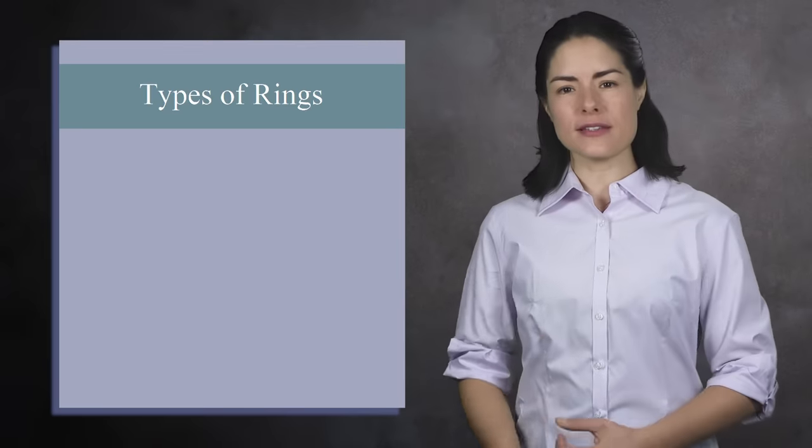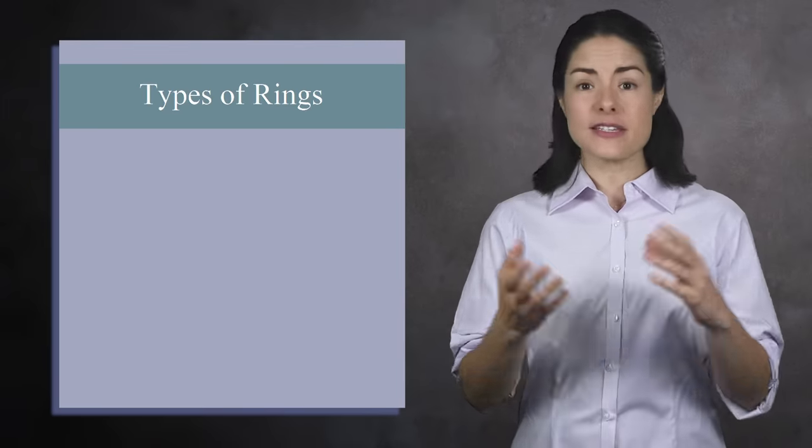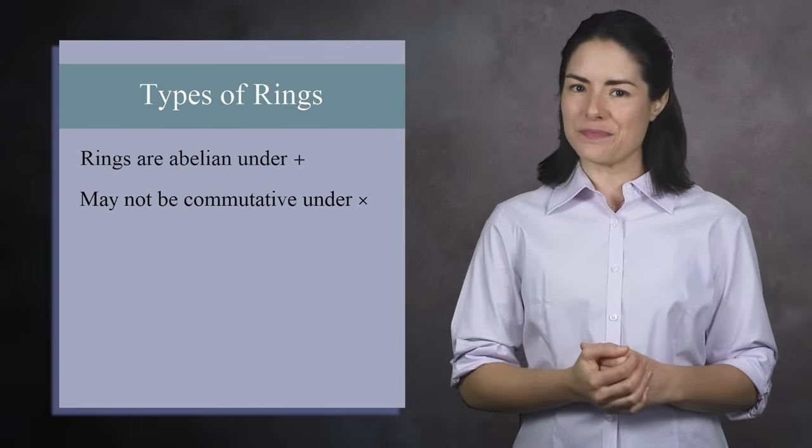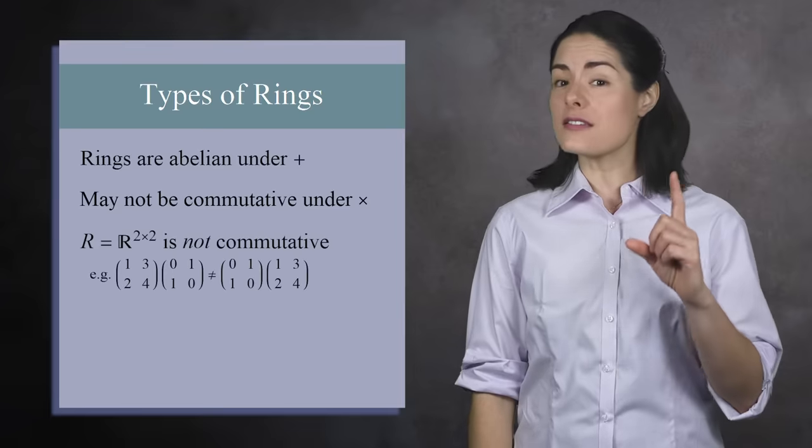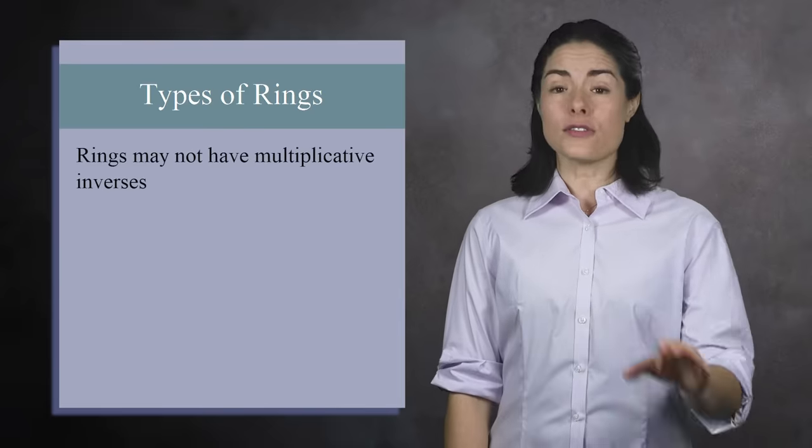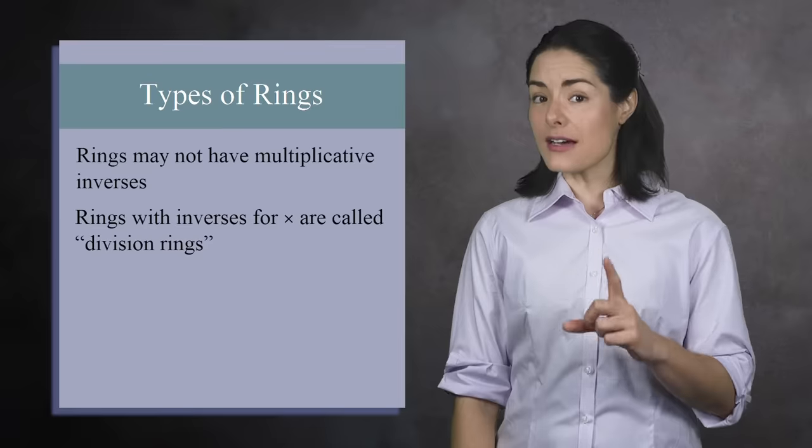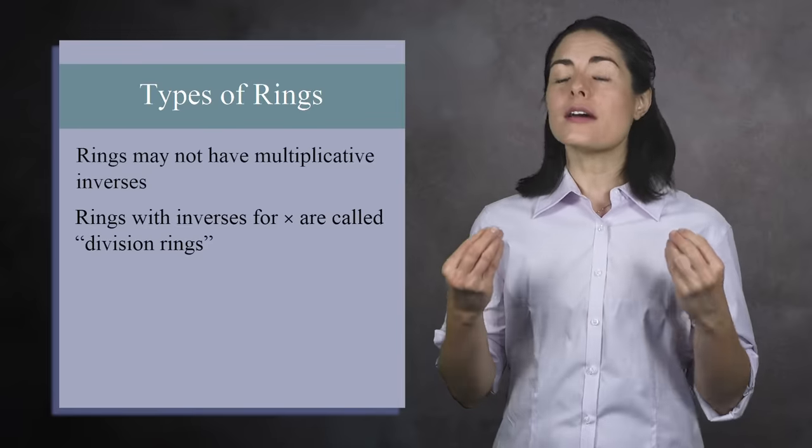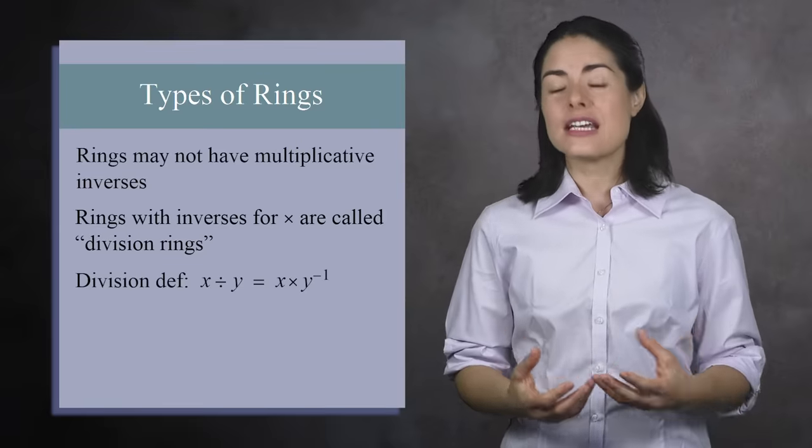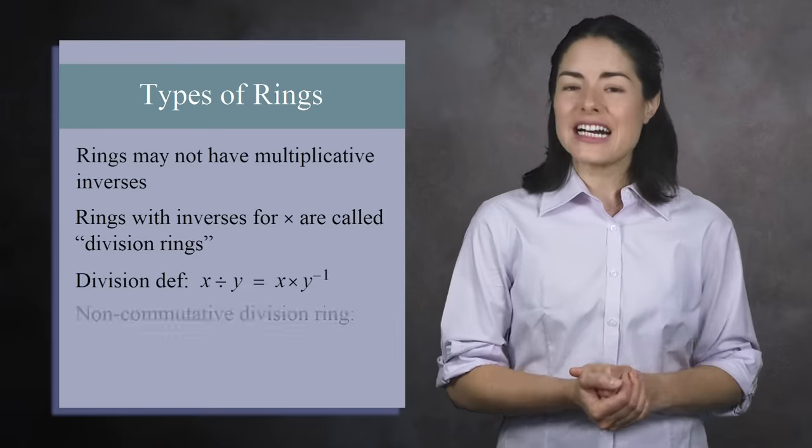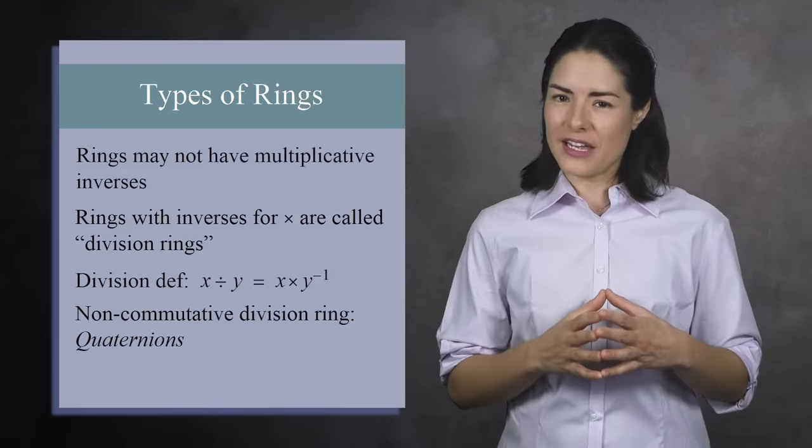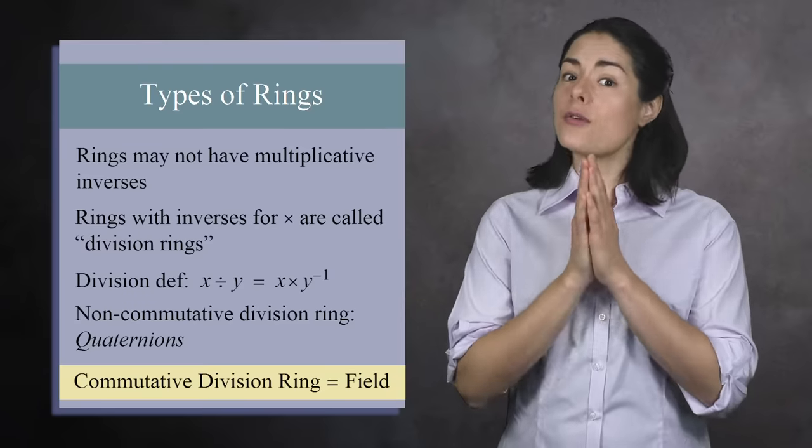There are additional names for rings depending on how close it comes to being a group under multiplication. For instance, while all rings are abelian under addition, they are not required to be commutative under multiplication. The 2x2 matrices with real entries are a great example of a ring that's not commutative. But if a ring is commutative, we call it a commutative ring. Also, rings are not required to have multiplicative inverses. If a ring does have inverses under multiplication, then we call it a division ring. This is a very descriptive name because the presence of multiplicative inverses allows us to define division. Division rings may or may not be commutative. A classic example of a non-commutative division ring is a quaternion, a quirky four-dimensional analog to the complex numbers. But if a division ring is commutative, then we call it a field.